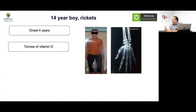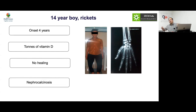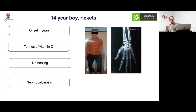On the contrary, there was a 14-year-old boy presenting with lower limb abnormalities who had been given large amounts of vitamin D with no line of healing, yet was again referred as nutritional rickets. In the first case, physiology was turned into pathology; in the second case, pathology was missed — unfortunately resulting in the development of nephrocalcinosis.